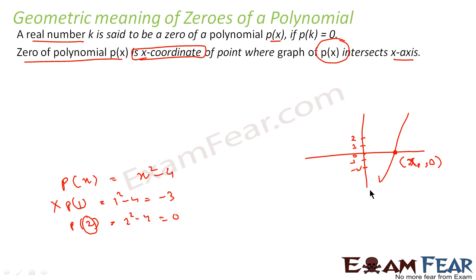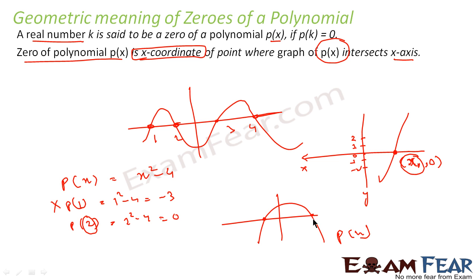the x-coordinates of the points where p(x) intersects the x-axis. If you see this function, it meets the x-axis at four points, so there are four zeros of this function. Similarly, if you have this graph, the p(x) function meets the x-axis at two points, so there are two zeros of this function.